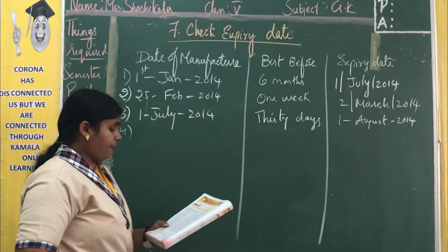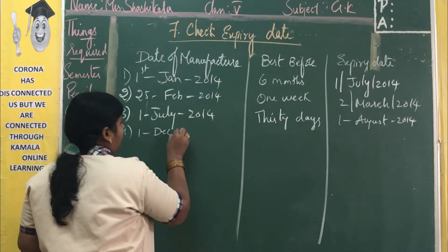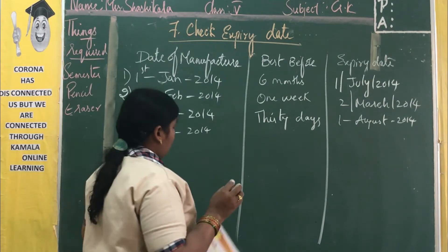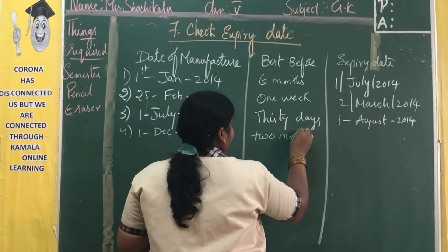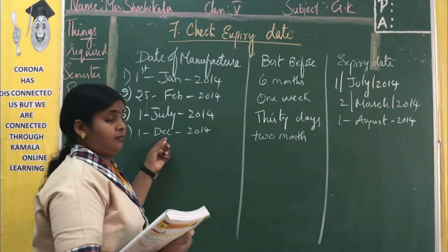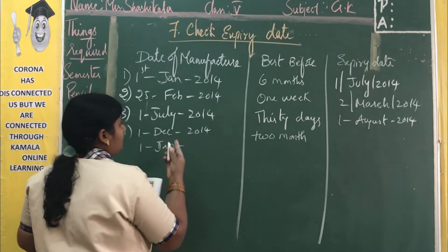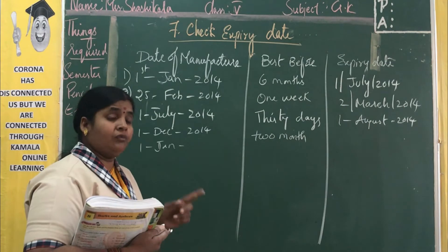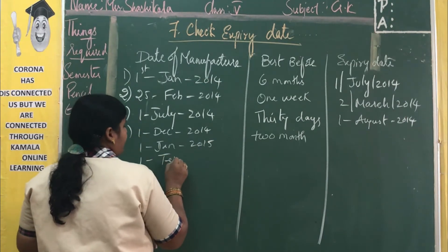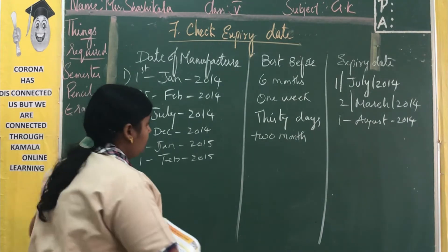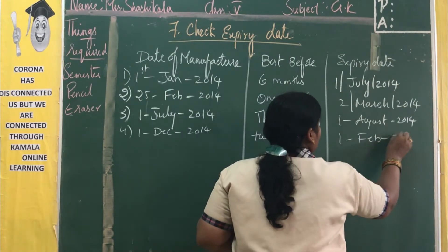Fourth one: 1st December 2014, best before 2 months. After December comes January, then February. So after January — which year? 2015. So 1st January 2015 and 1st February 2015. The answer is 1st February 2015.